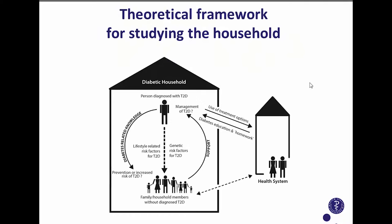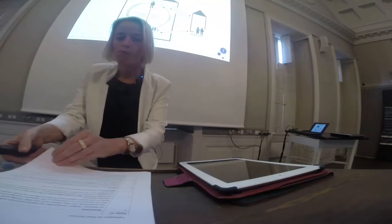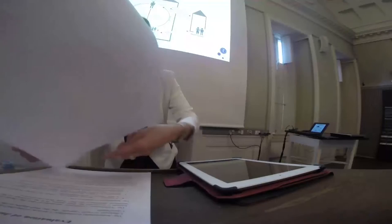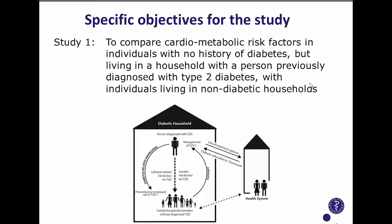These pathways constitute the theoretical framework for this study. In order to investigate these pathways, we developed three sub-studies. The first sub-study wanted to compare cardiometabolic risk factors in individuals living in the same household as a person diagnosed with type 2 diabetes.